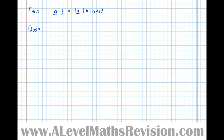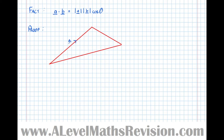Imagine this triangle here. This side here, we're going to make that vector A. So to get from here to here, we traverse vector A. Likewise, let's call this one vector B. The angle here is theta. And this vector here — to get from here down to here — is minus A plus B, just using GCSE vector rules. So we've got everything we need to start making this proof.